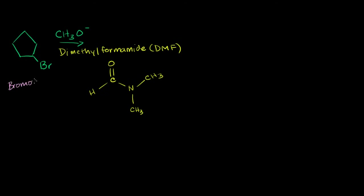If we have some bromocyclopentane dissolved in our solvent, which is dimethylformamide — sometimes you'll see that written as DMF — I've drawn the formula for it here so we can think about what type of solvent it is. And also in our solution, we have the methoxide ion right here. So let's think about what type of reaction might occur.